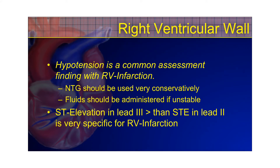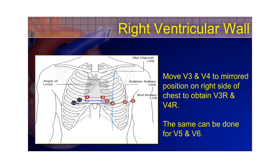Hypotension is a common assessment finding with right ventricular infarction. Most inferior wall MIs involve a good portion of the right ventricle, but not all become hypotensive — not all right ventricular infarctions become hypotensive. However, you should avoid nitroglycerin or use it very conservatively, and fluids should be administered if these patients are unstable. If there's ST segment elevation in lead 3 that is greater than in lead 2, that is very specific and pretty sensitive for a right ventricular infarction. For V3R and V4R, just move the V3 and V4 electrodes to the other side of the patient's chest to get a better angle of view of the right ventricle.